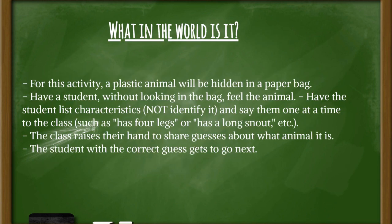For our warm-up activity today, we are going to be playing What in the World is It? One of you is going to be given a paper bag with a plastic animal in it. Your goal is to describe the animal to your classmates so that they can guess what kind of animal it is. Make sure if you're the one with your hand inside the bag, you don't give away the animal's name — just describe different features about it, like it has four legs, it has a tail, it has a long snout.